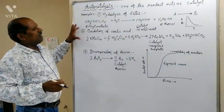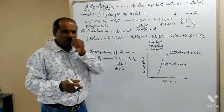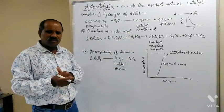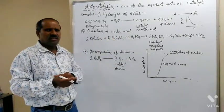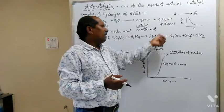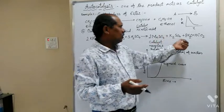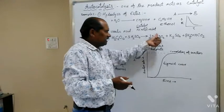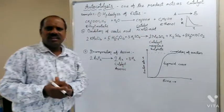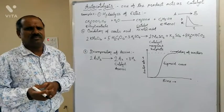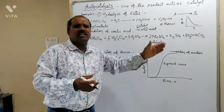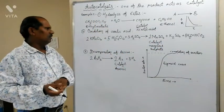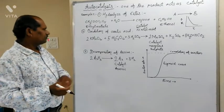The second example of autocatalysis is the oxidation of oxalic acid. Whenever we treat an acidified solution of potassium permanganate for the oxidation of oxalic acid, manganous sulphate (MnSO4) is formed, along with K2SO4, 8H2O, and CO2 as products. Amongst all these products, MnSO4 — that is manganous sulphate — itself starts to act as a catalyst, and the rate of reaction goes on increasing.